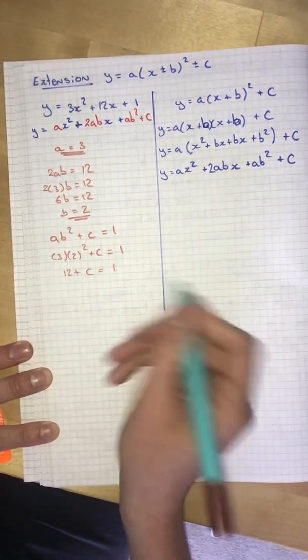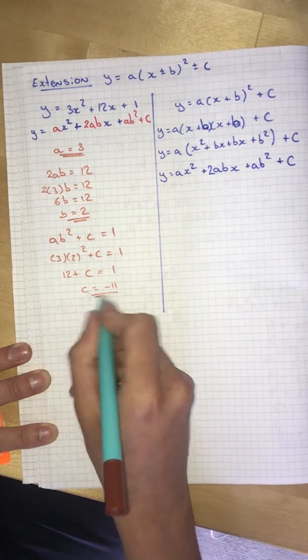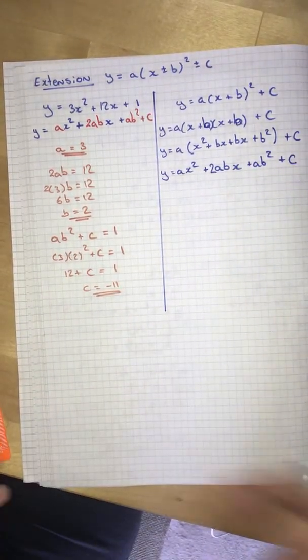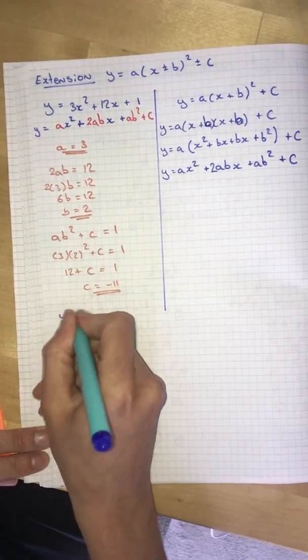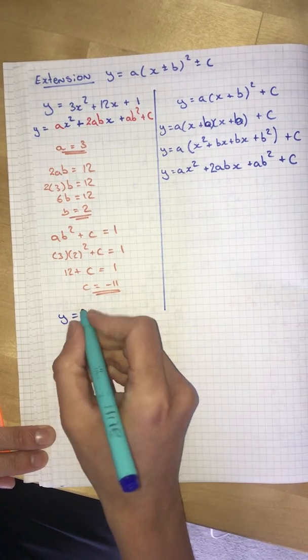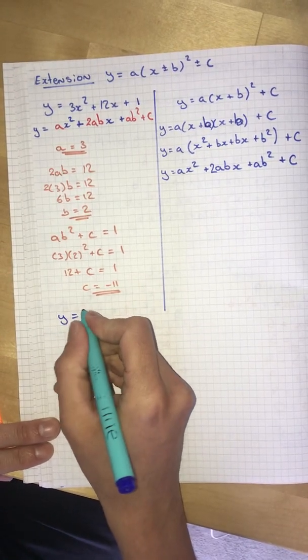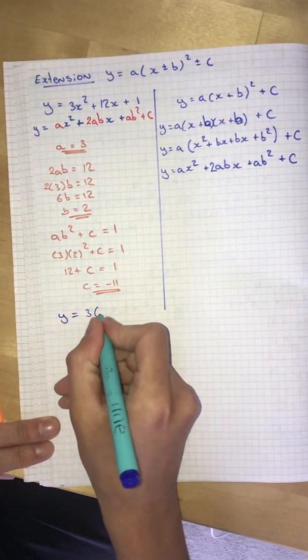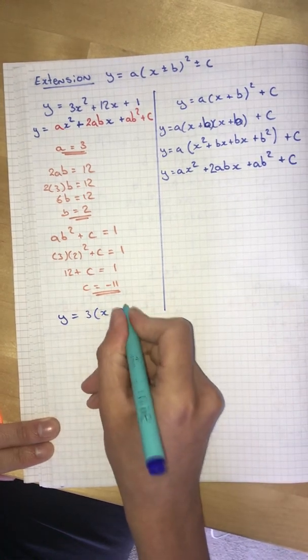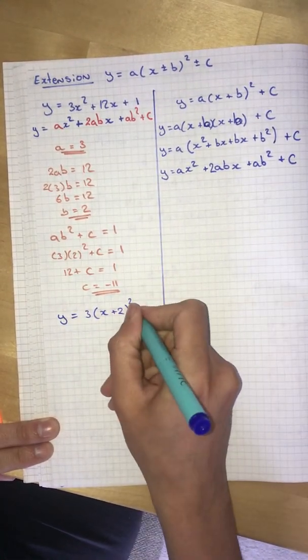12 plus c equals 1. So c equals 1 minus 12, which is negative 11. Which means that our completed square, this is y, equals 3 x plus 2 squared minus 11.